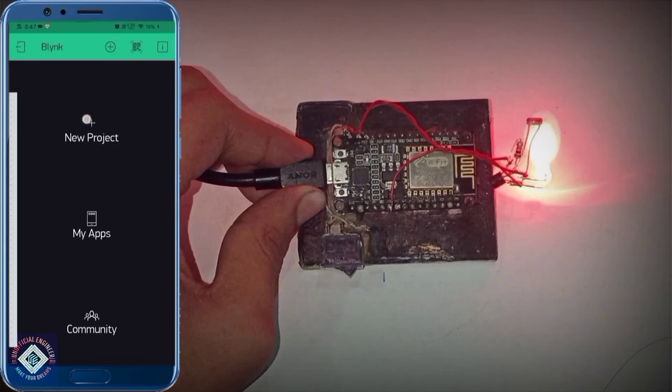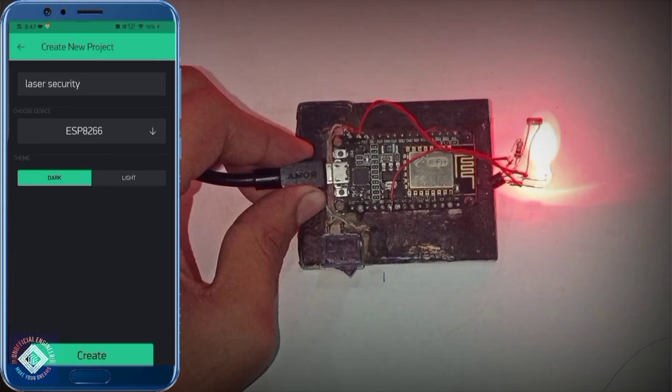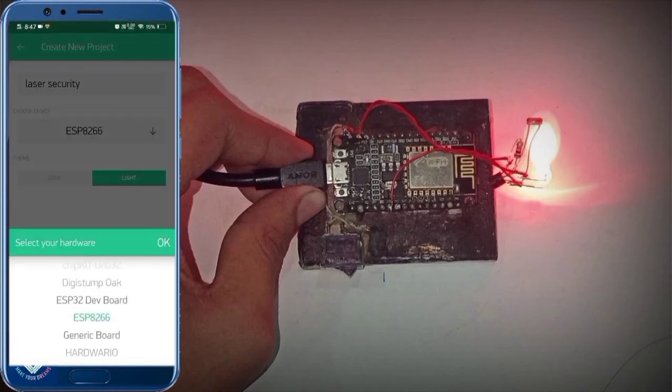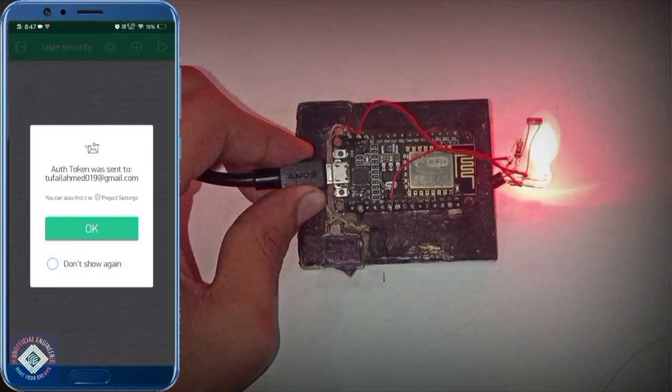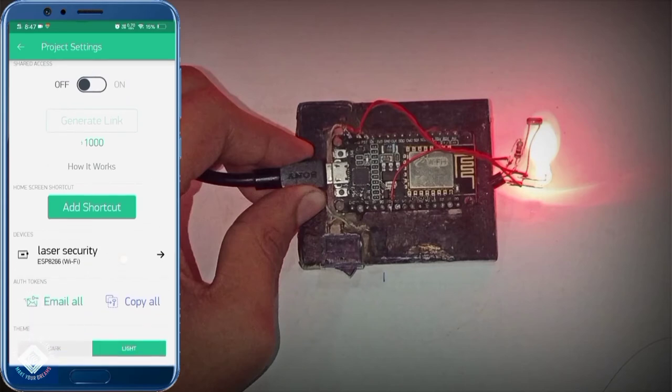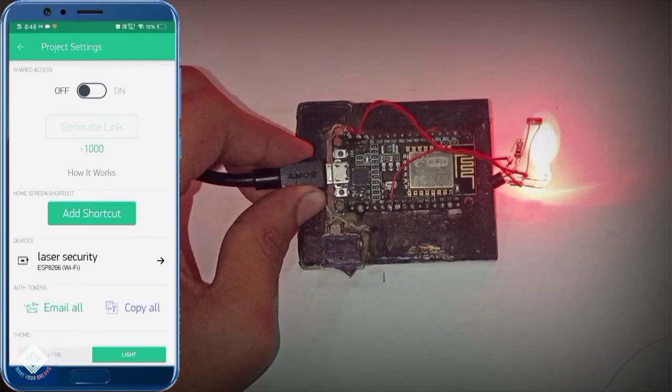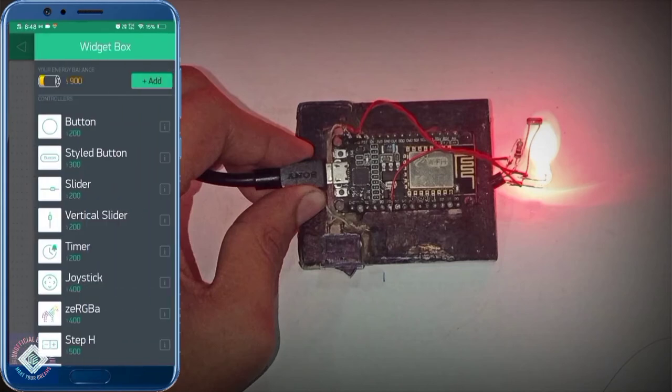So open the Blink app, click on new project, give your project a name, your pet name. Here I have given laser security. Select the right board theme and click on create. Option type will be just WiFi and create. Here we have received the auth token in our Gmail. If you don't receive it, then click on the settings part, click on email all, and again you will receive it.